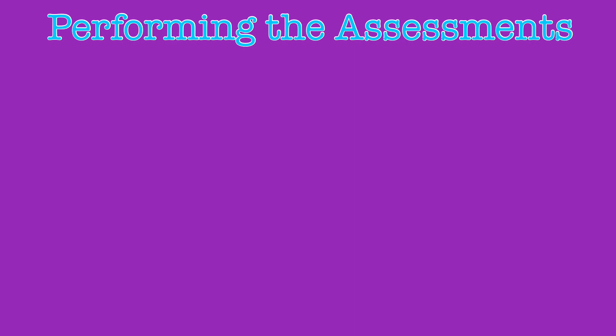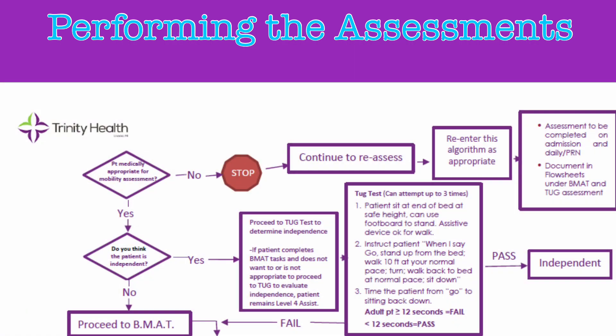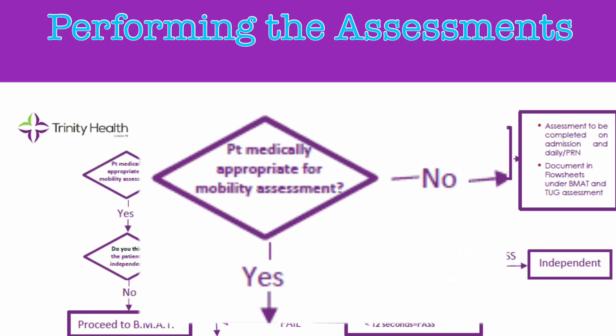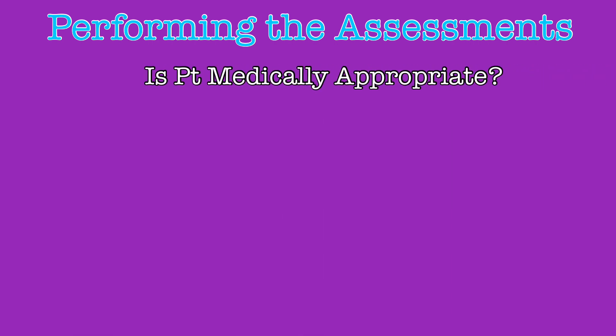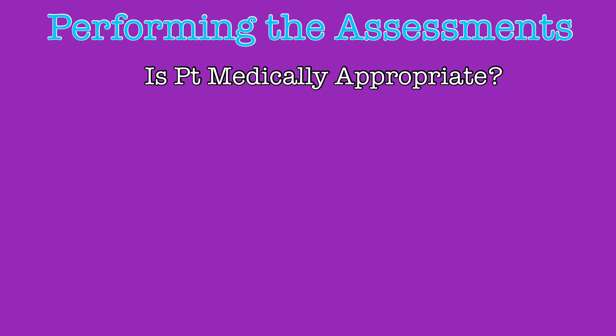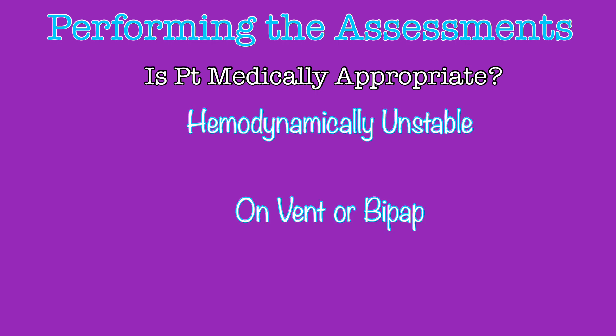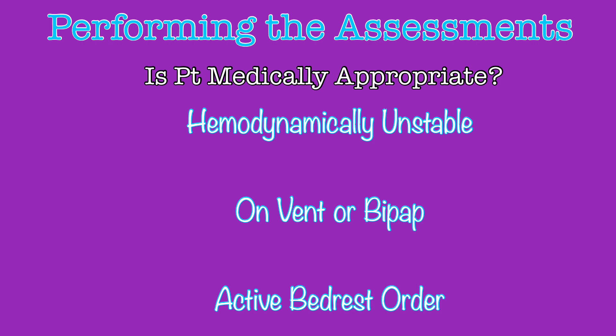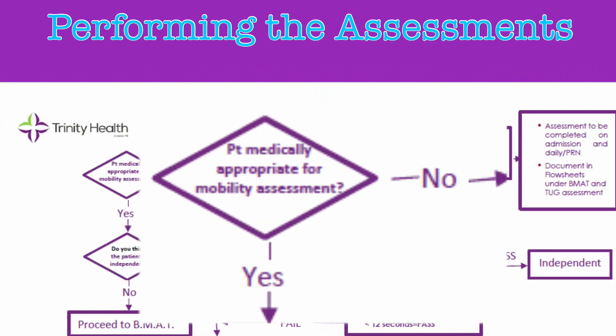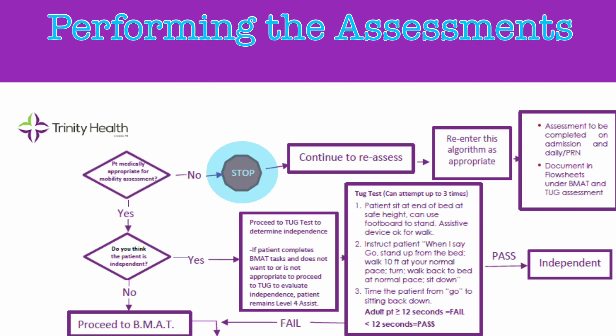Now we can look at how to complete the assessments. There is a useful decision tree available on the Trinity Livonia SharePoint page to guide you in the assessment of patients, and we'll utilize this as our visual reference here. Begin in the top left corner: is the patient medically appropriate for mobility assessment? To be inappropriate for mobility assessment, the patient has to be hemodynamically unstable, on a vent or BiPAP, or have an active bed rest order on the chart. If that is the case, you would answer no, and the stop sign signifies you don't continue with any form of assessment.